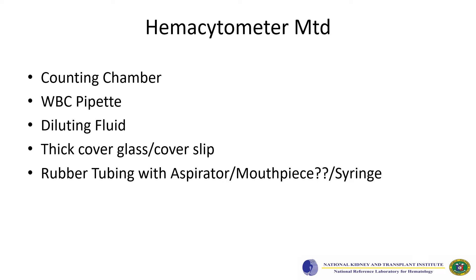The tools used for the hemocytometer method are the counting chamber, WBC pipette, diluting fluid, thick cover glass or coverslip, and the rubber tubing with an aspirator, which used to be the mouthpiece and was later replaced by the syringe.